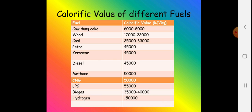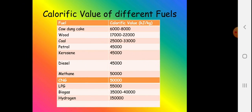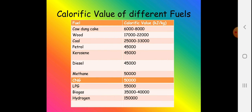Cow dung cake is used for domestic purposes like boiling water in villages and is free, so people prefer it, but it shows incomplete combustion and produces a lot of smoke, which is not good for the environment or human lungs. The highest calorific value shown here is hydrogen at 1,50,000 kJ/kg. That is why hydrogen is the fuel used for jet planes and flights — it has the highest calorific value.